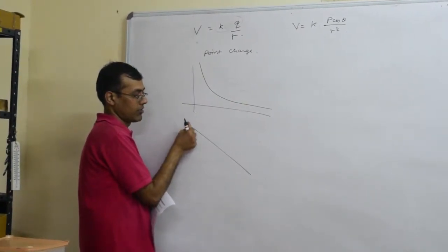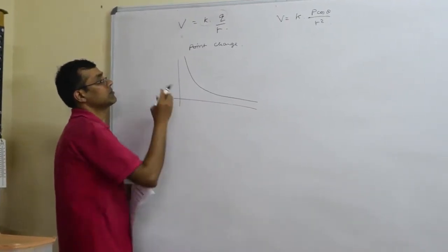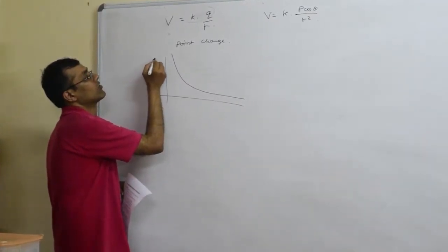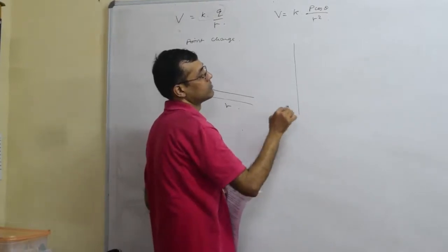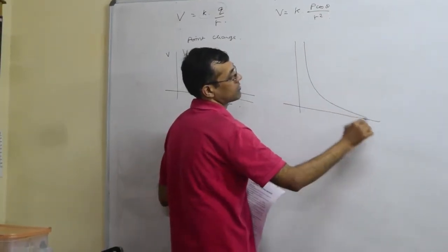So this is your V, this is your r. What can you say about this one? So it will be something like this.